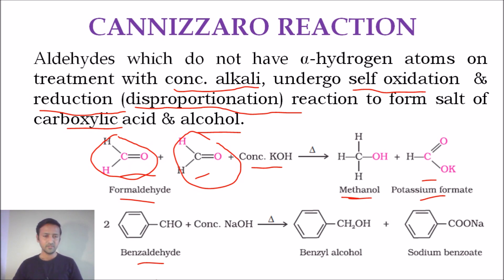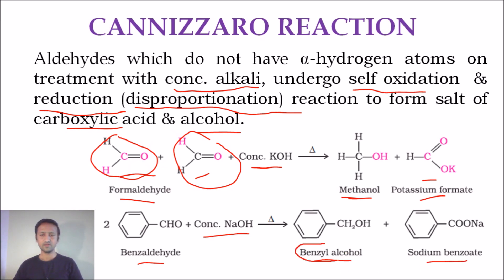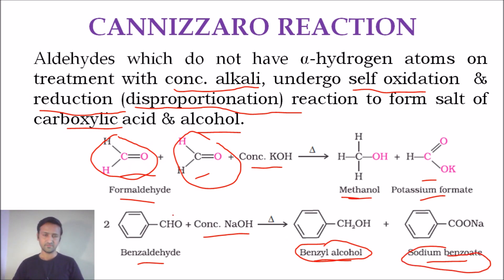The second example is with benzaldehyde. Two moles of benzaldehyde reacting with concentrated sodium hydroxide or potassium hydroxide gives a mixture of benzyl alcohol and sodium benzoate. Benzyl alcohol is the reduced product and sodium benzoate is the oxidized product. That covers the Cannizzaro reaction; now let us look at its mechanism.